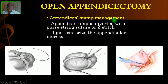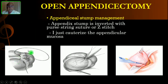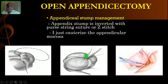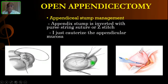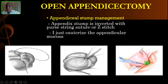What to do with the appendix stump? I won't bury it — I have never buried the appendix stump and so far there have been no complications. But classically, the recommendation is to bury the appendix stump by making either a purse-string suture or a Z-stitch, inverting the stump inside to avoid mucocele formation. I prefer to cauterize the protruding mucosa with diathermy and never bury the stump.